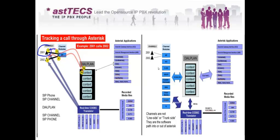This call does not have to be only SIP — it can also be an IAX call. The 2001 extension might call an outside landline or mobile number, so the initiation on the 2001 side may use the SIP channel, while when the call is dialed out it might go over ISDN PRI, GSM, or even IAX.